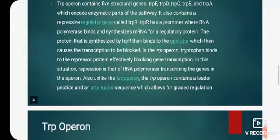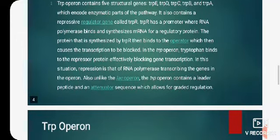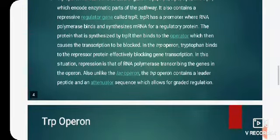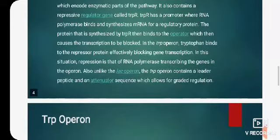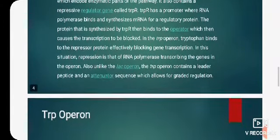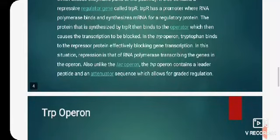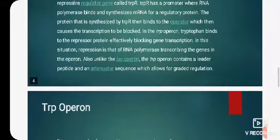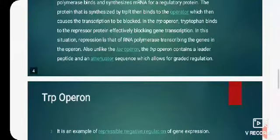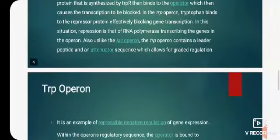The protein that is synthesized by TRP-R then binds to the operator, which then causes the transcription to be blocked. In the TRP operon, tryptophan binds to the repressor protein, effectively blocking gene transcription. In this situation, repression is that of RNA polymerase transcribing the genes in the operon.